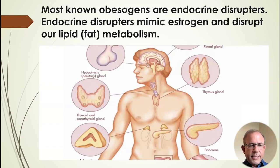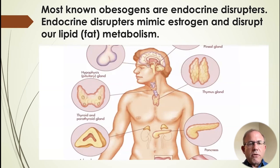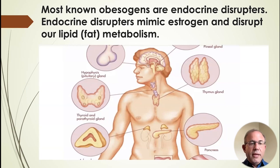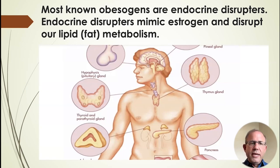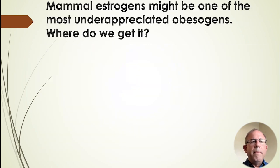Because it's complicated, it's been difficult to study and the message has been diffused. Food companies and chemical companies can just say 'we need more research.' But even if the research weren't in, the precautionary principle applies: don't expose us to these chemicals if we don't know the long-term effects.